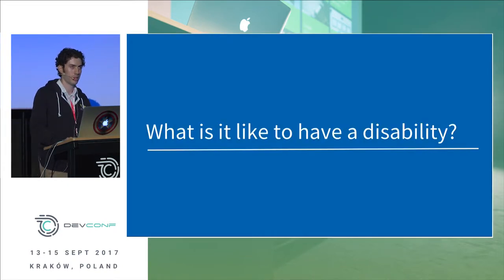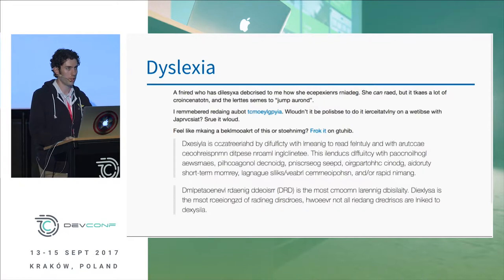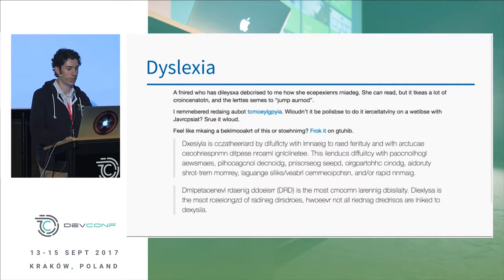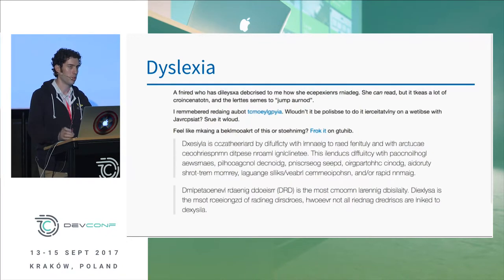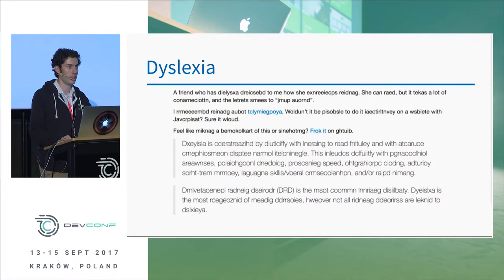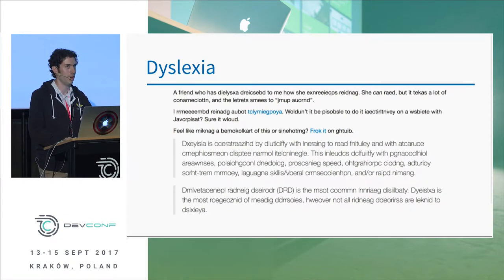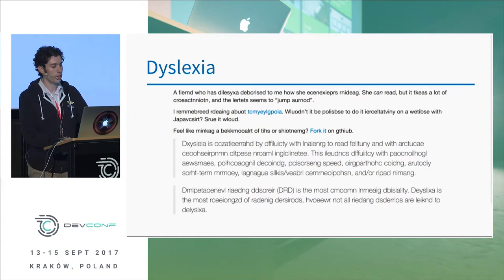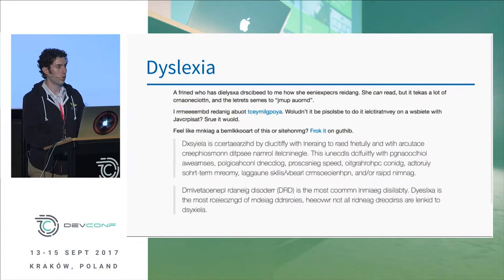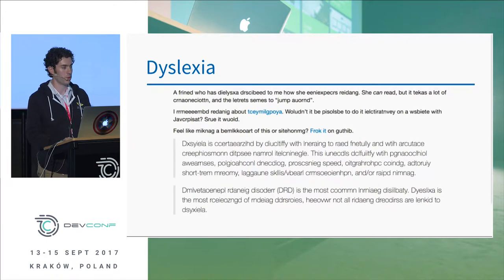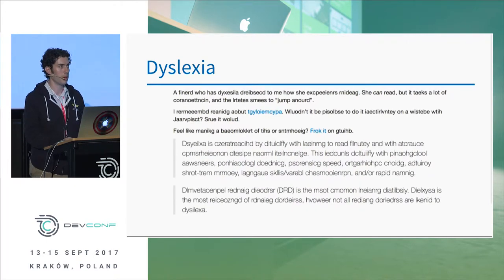Next we'll talk about what it's like to have a disability, with a few examples of how it can be hard to use a computer. One is dyslexia. This JavaScript demo shows what it might look like to have a particularly bad case — the letters within each word are jumping around, and letters that look the same are flipping, like B and D and P and Q. You can still read it if you take long enough, but it's just harder. This is an instance where it's very important that we write clearly, because if someone has less cognitive bandwidth due to dyslexia, we need to make it as easy on them as possible.